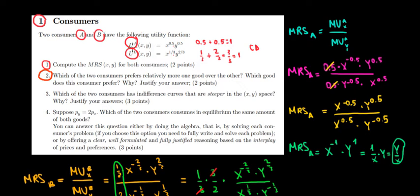Okay, so let's look at our utility for consumer A, for consumer B, and answer this question just by using the property of Cobb-Douglas function.